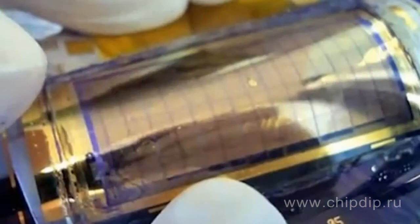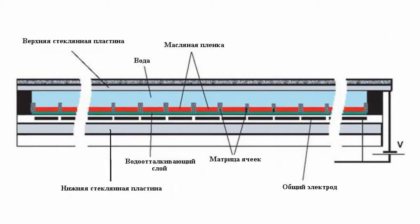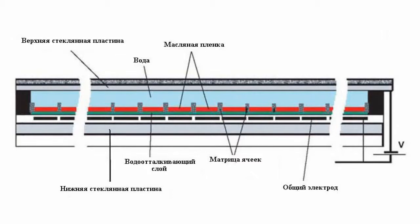An electrowetting display is a type of reflective display which is based on the electrowetting effect. The display consists of two glass plates separated by gap elements. At the lower part of the plate there is an aluminium film serving as a common electrode and as a reflector. On its inner surface there is a matrix of cells which are filled with an oily liquid.